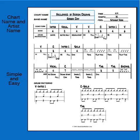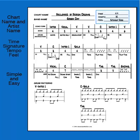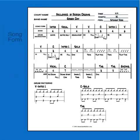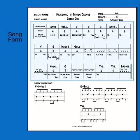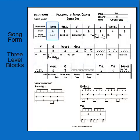At the top of the chart is the chart name and artist name. To the right is the time signature, tempo, and feel of the song. The middle section is the complete song form, all mapped out with no repeats from start to finish, and it is composed of many three-level blocks.